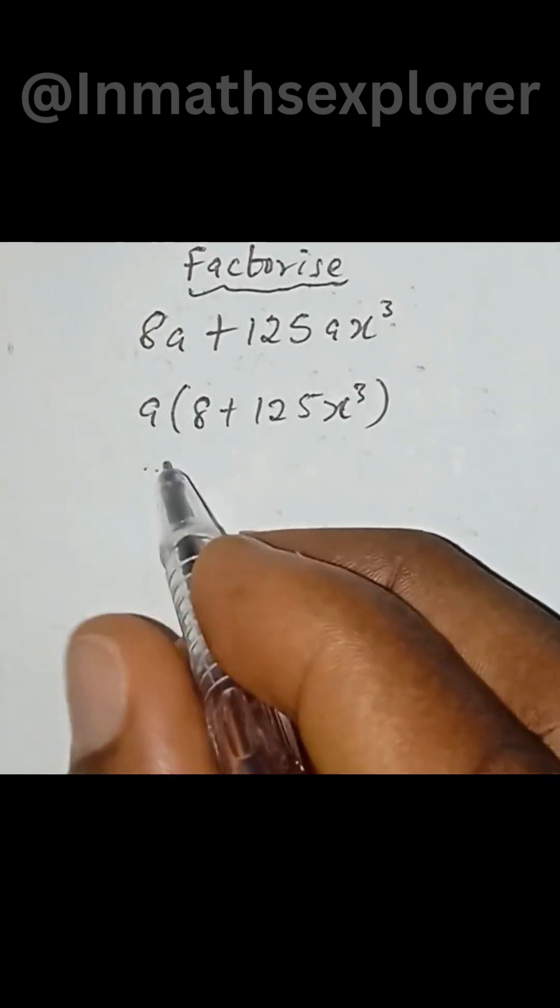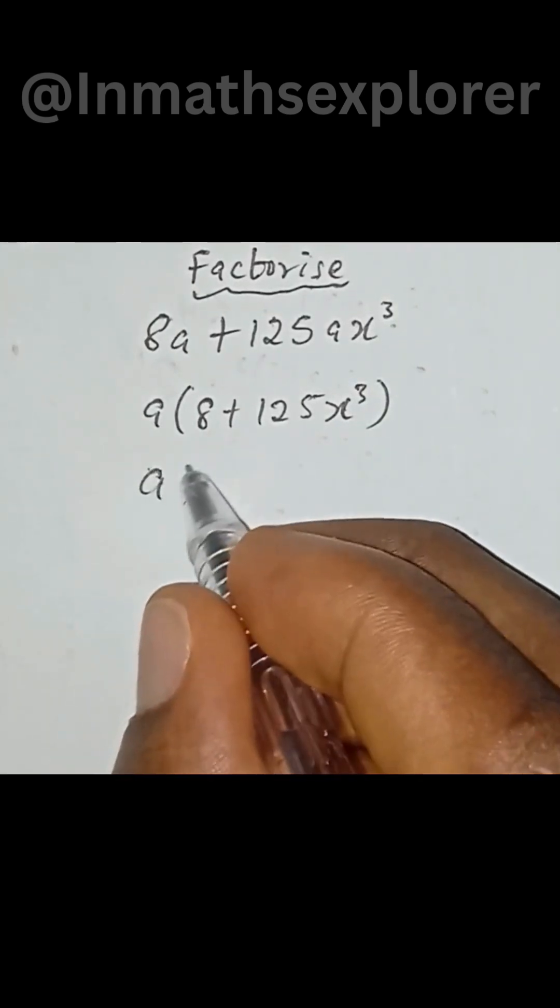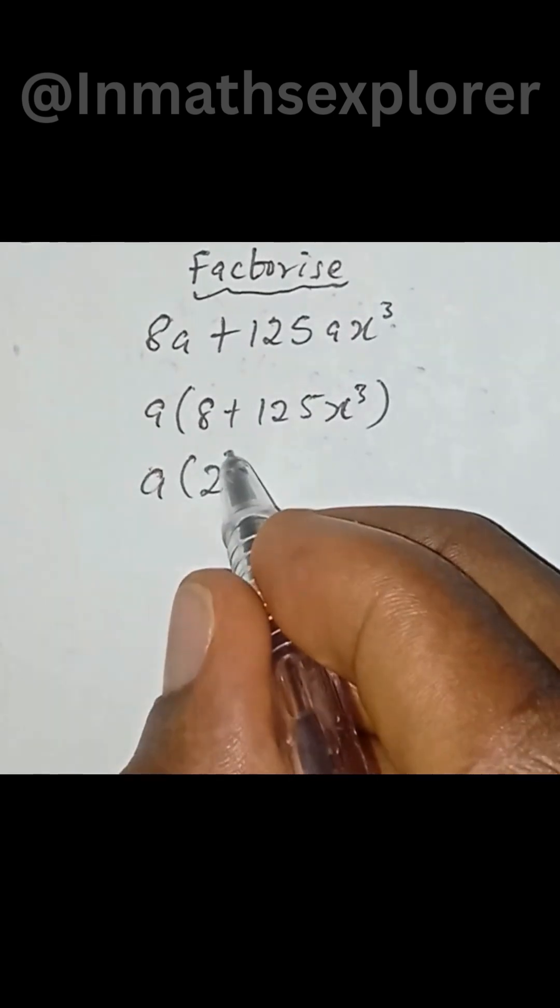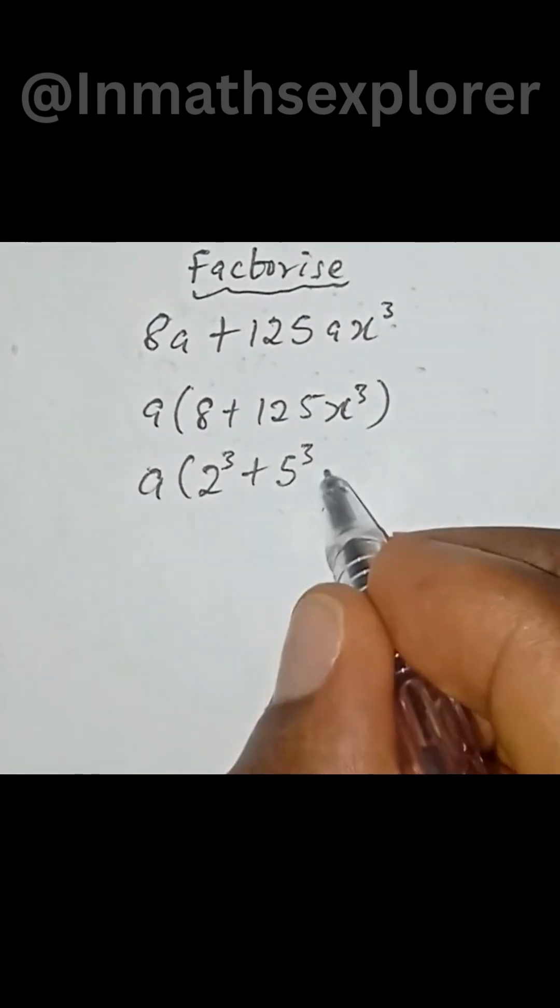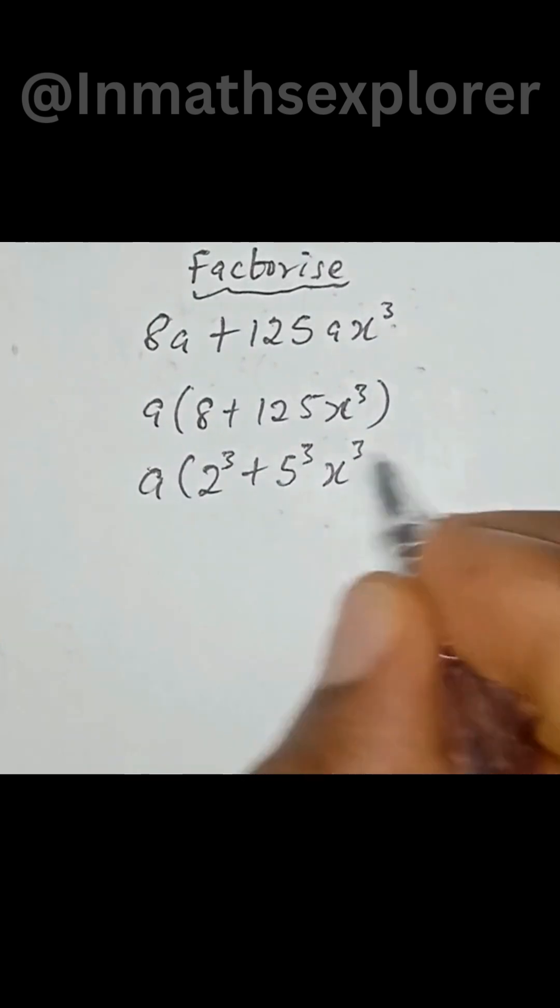Now here the next thing is to put all our expression into the power to the power of 3. So we have a into bracket 2 to the power of 3 then plus 5 to the power of 3 then x to the power of 3.